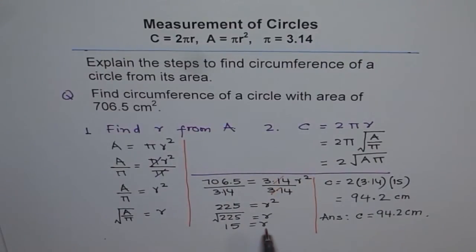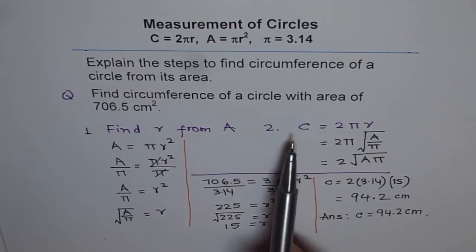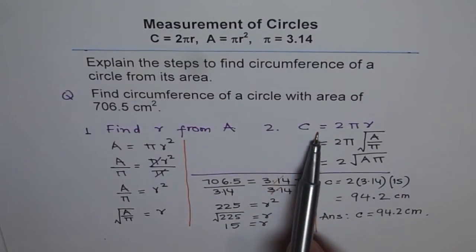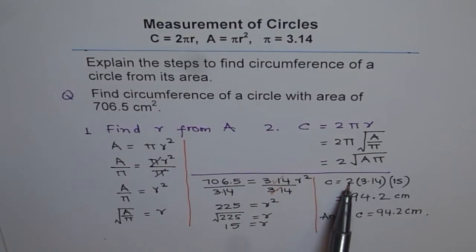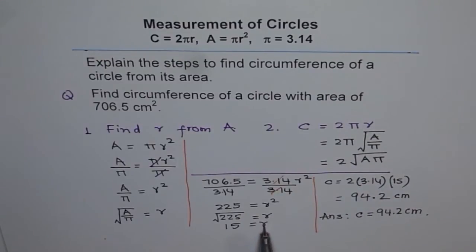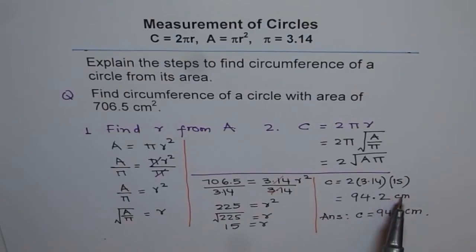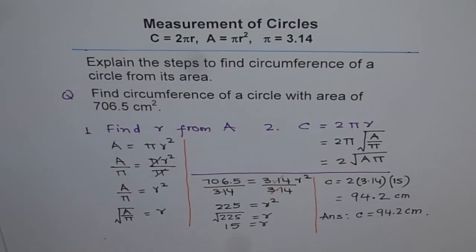Now once you know the radius, you can find the circumference using the formula C equals 2πr: 2 times 3.14 times 15, which is the radius. Once you multiply all this, you get 94.2 centimeters.